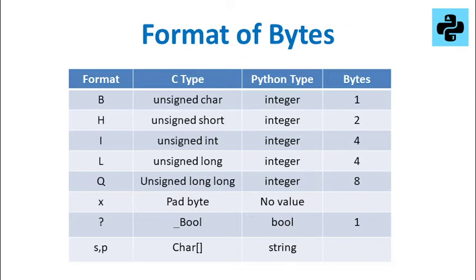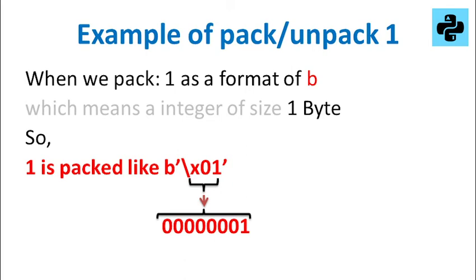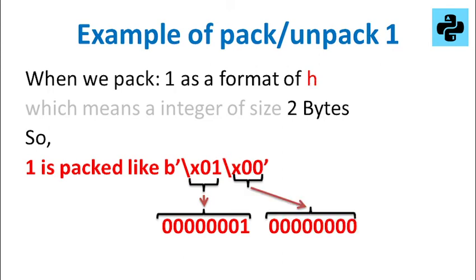As an example, we pack the digit 1 using the letter B, which takes 1 byte. We can also pack the digit 1 using the letter H, which takes 2 bytes.